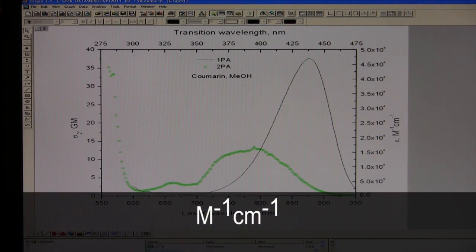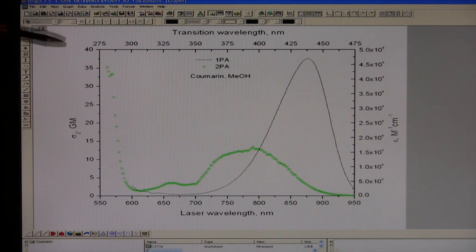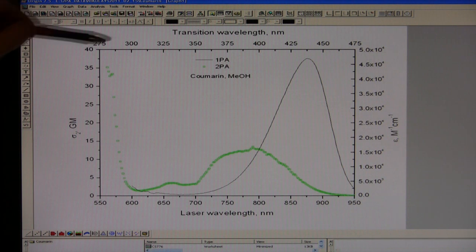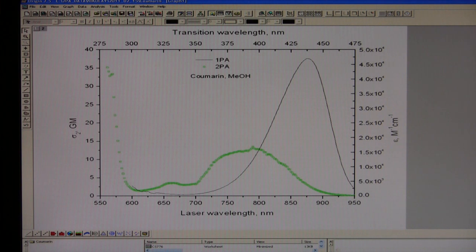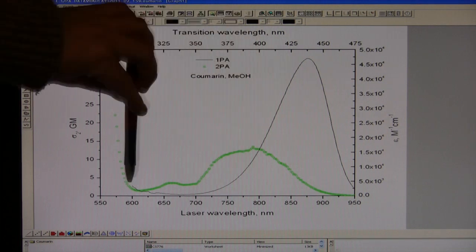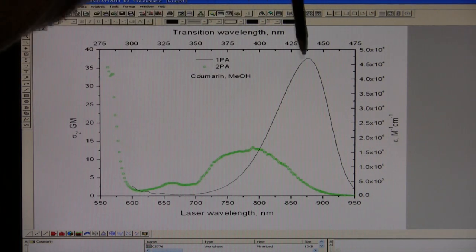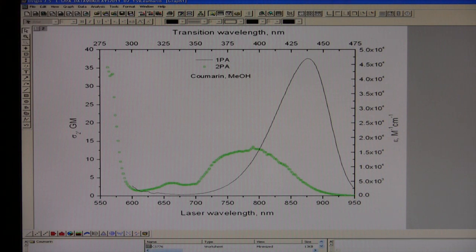The units on the right hand side are the inverse moles, inverse centimeters, and that's the units for extinction coefficient. And if you note the top scale is about, is exactly one half of the bottom scale. That allows us to superimpose both one and two photon absorption spectra into transition wavelengths. So what you see there it's a real transition, so that is most probably S0 to S1 first transition.